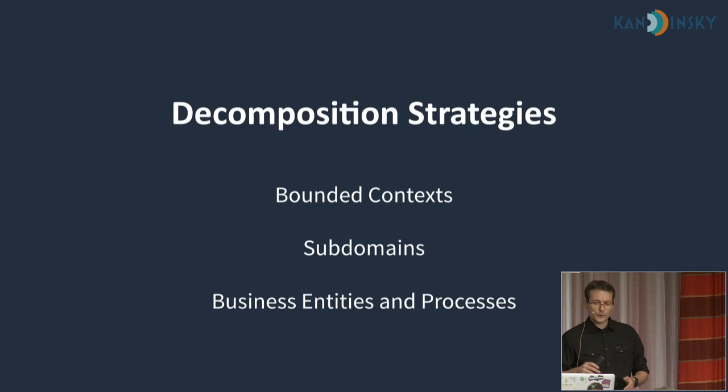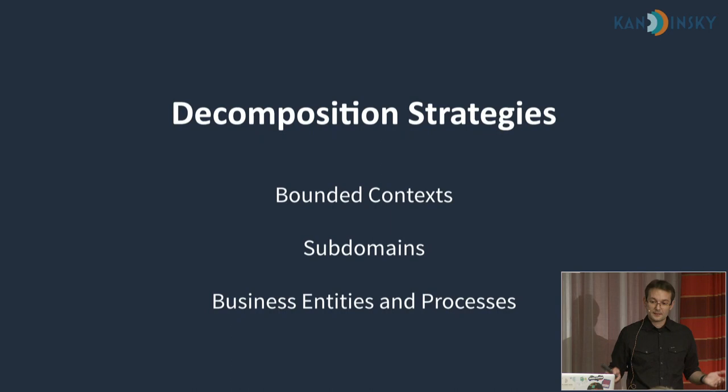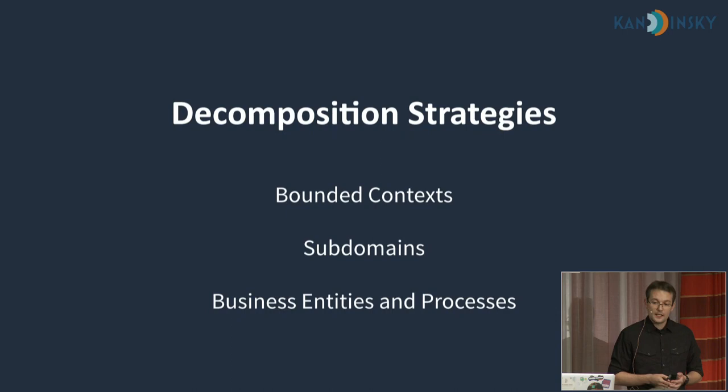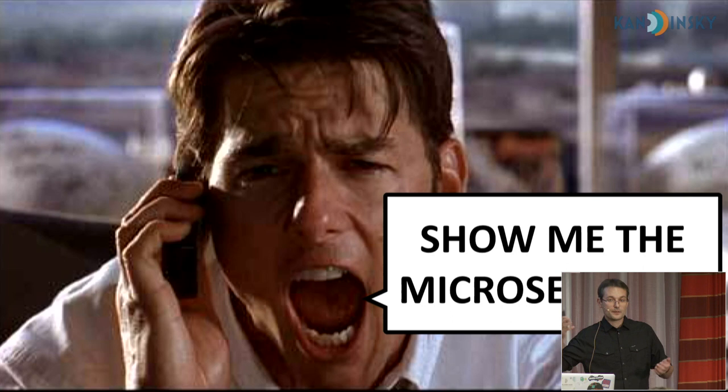To quickly sum up, those are the three decomposition strategies we used. We started with an enormous monolithic bounded context, split it into real bounded contexts to protect the consistency of the models, then tried decomposing them into smaller services — a service per subdomain, and later dedicating a service for a business entity. The question is: which of these three strategies is the best option for achieving microservices?